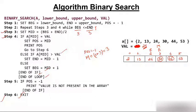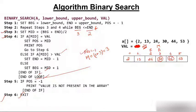Now beginning is 3 and end has become 2. Beginning is not less than end, so the condition becomes false and we exit the loop. We check if position equals -1 — yes, position remained -1. Therefore we print that the value is not present in the array. So this is how binary search correctly handles the case where an element does not exist.